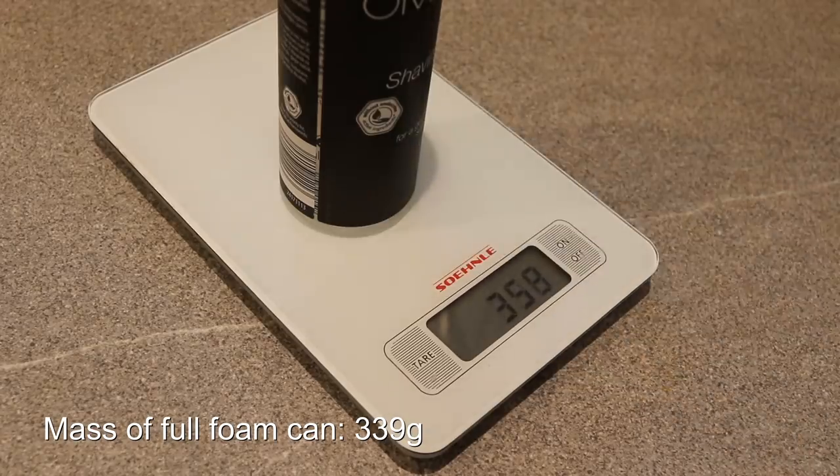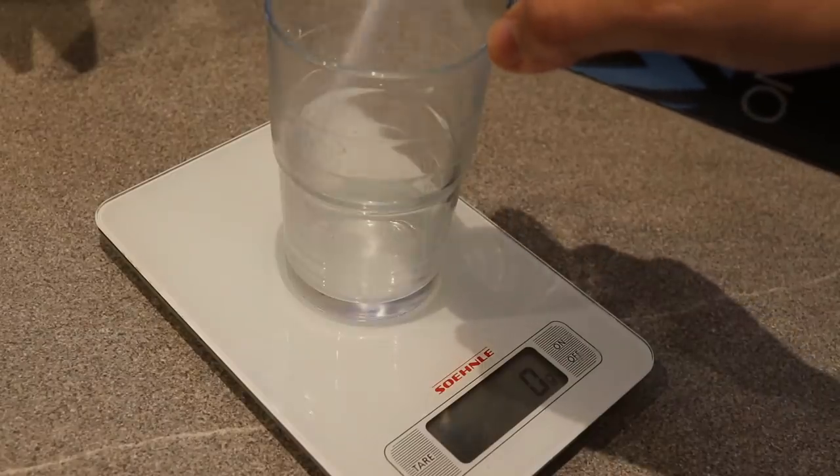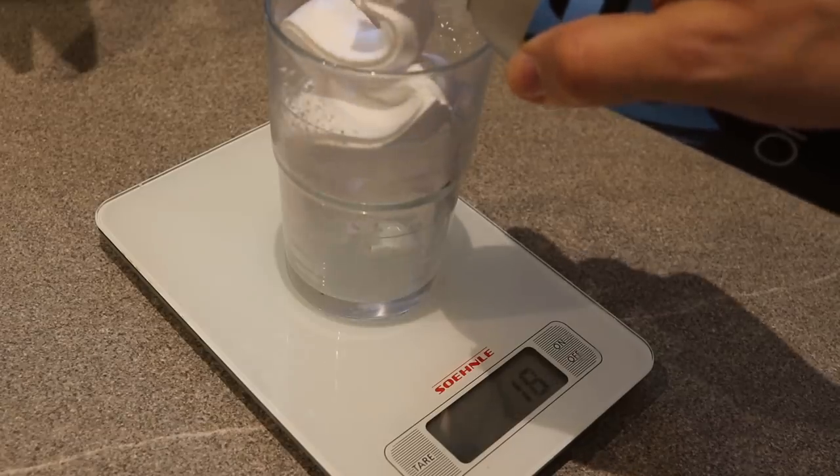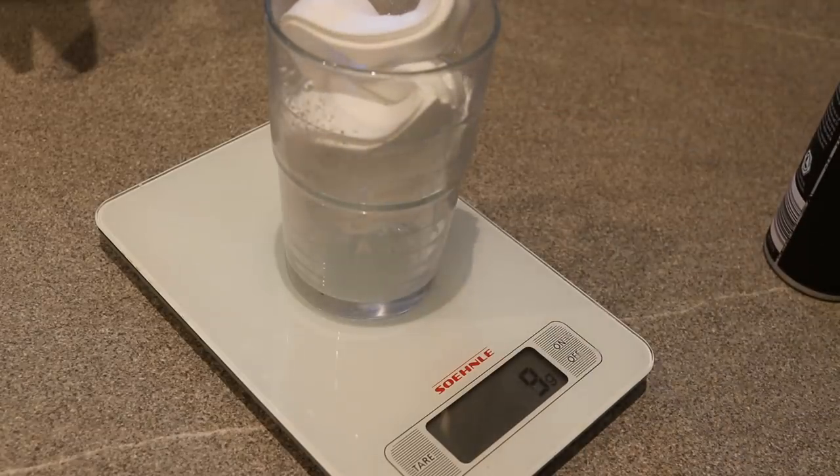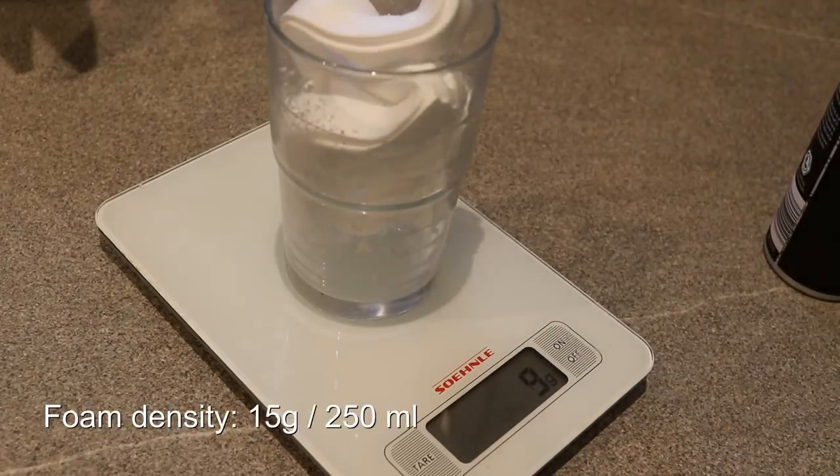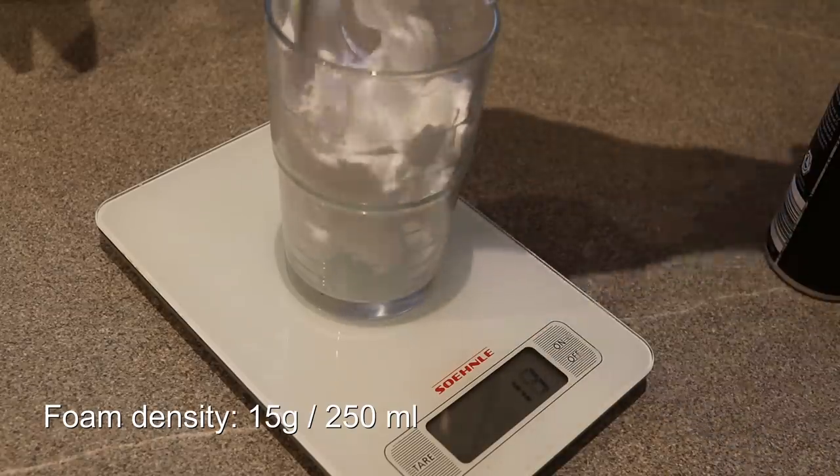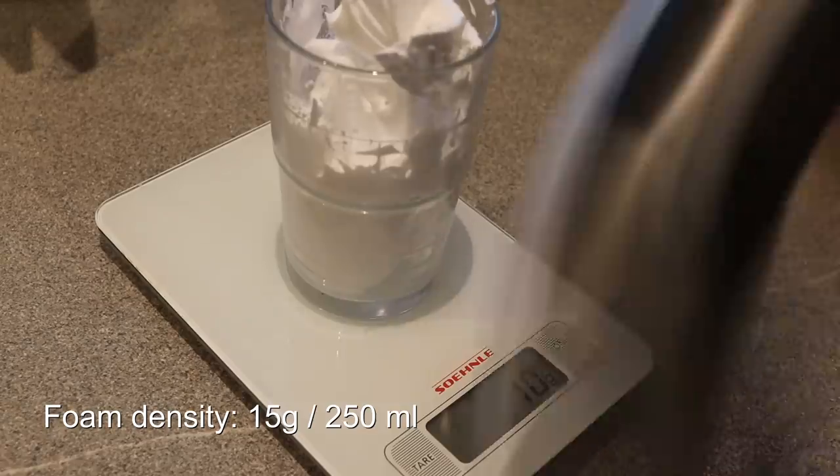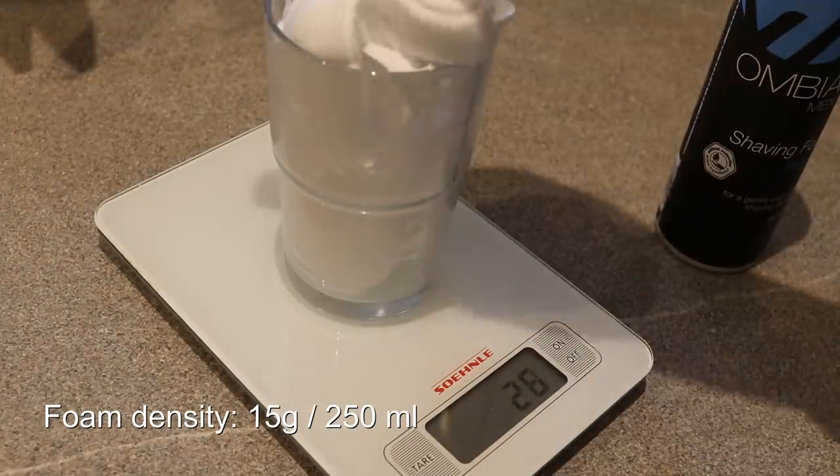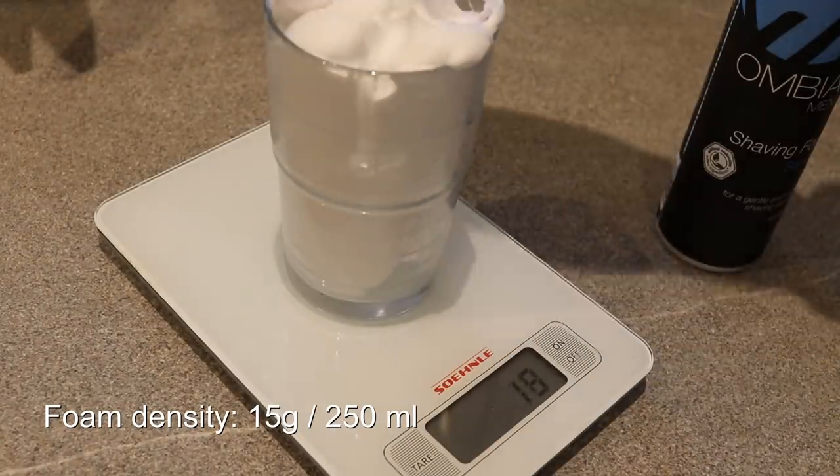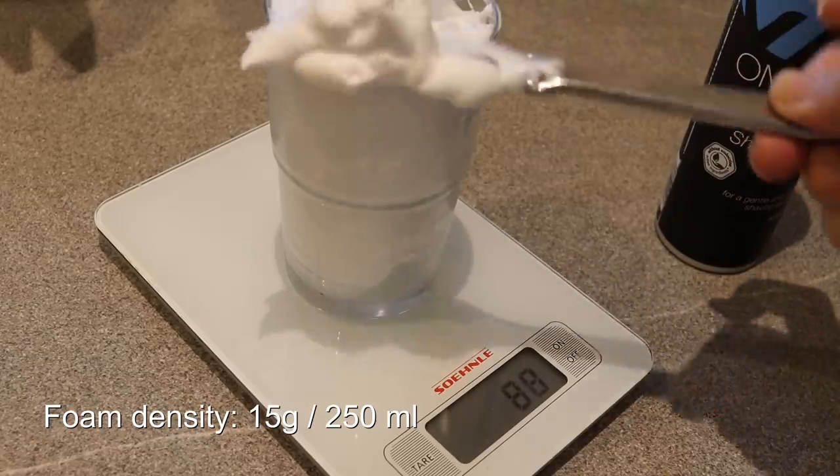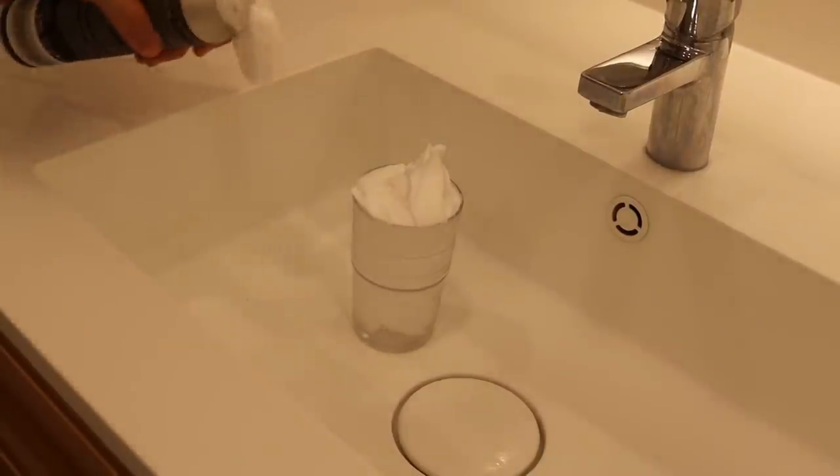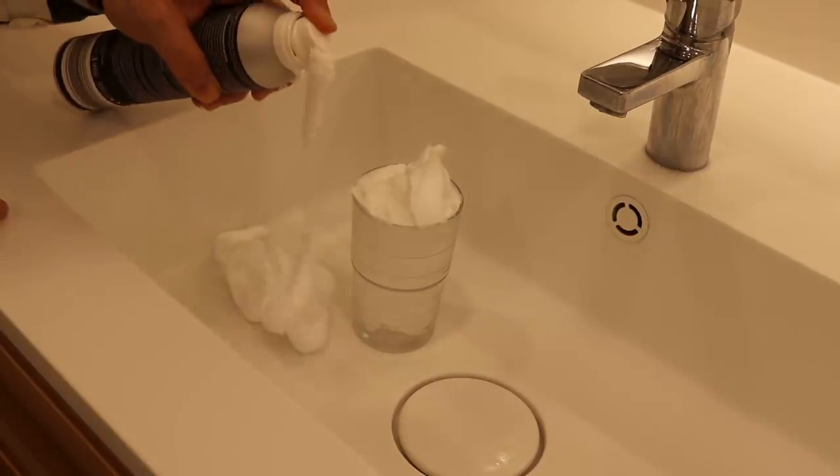Well, the full can of foam has a mass of 339 grams. And now I am determining the density of foam. So I'm filling up a glass with 250 milliliters of foam. And I found out that this has around 15 grams. So with the density and the total foam mass, I can determine the volume later on. So I'm just going to scoop away the excess.